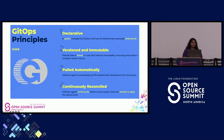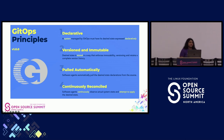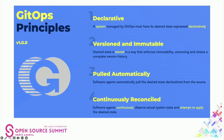I'm going to go over the principles really fast. The first one is that a system managed by GitOps must have its desired state expressed declaratively — everything's written in code, it's reusable, there's an audit trail, all of that. The second one is that the desired state is stored in a way that enforces immutability, versioning, and retains a complete version history. So there's no sneaking in a change — everything's recorded.